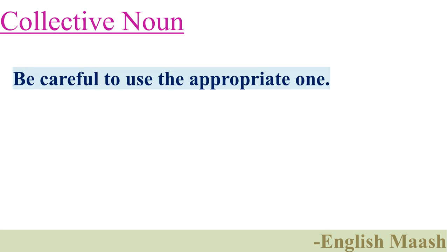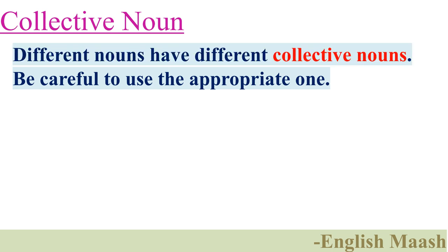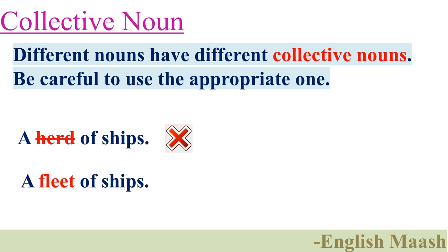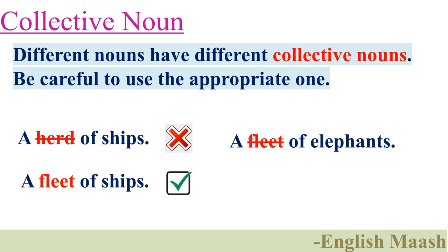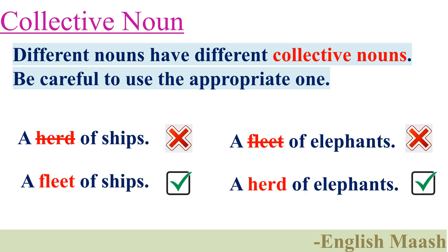When we use a collective noun, always be careful to use the appropriate one, because different nouns have different collective nouns. It is wrong to say a herd of ships — a fleet of ships is the correct one. A fleet of elephants is wrong — a herd of elephants is the correct one.